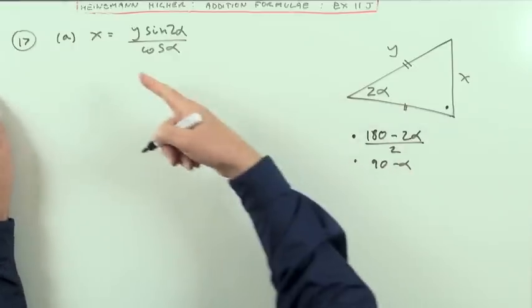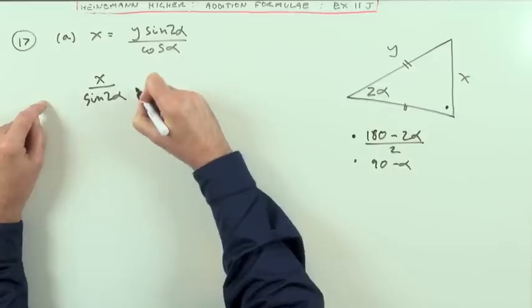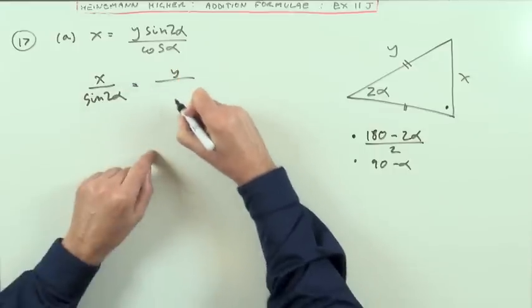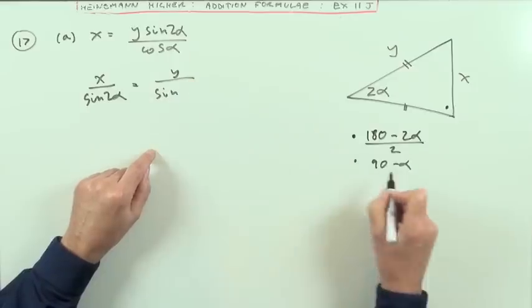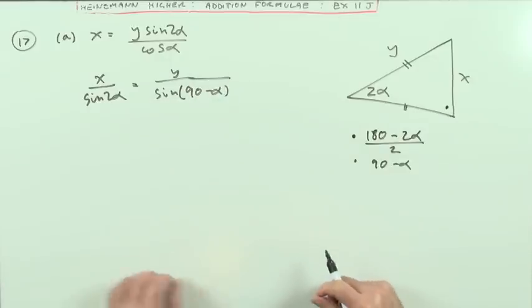So I could write out my sine rule here then. X over the sine of its opposite angle, 2α, should be Y over the sine of its opposite angle, which is 90 minus α. Then I can expand that.